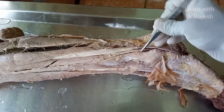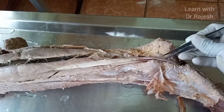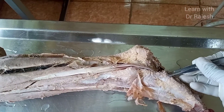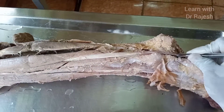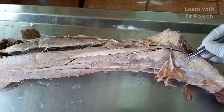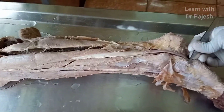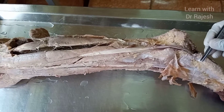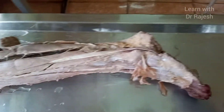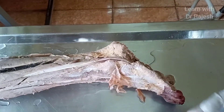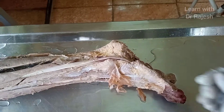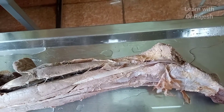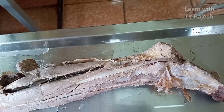The peroneus brevis also crosses the ankle behind the lateral malleolus and gets inserted onto the tubercle at the base of the fifth metatarsal bone. Its prime action is aversion of the foot. Both peroneal muscles are innervated by the superficial peroneal nerve, which is a branch of the common peroneal nerve.